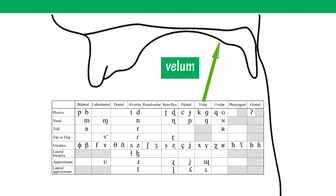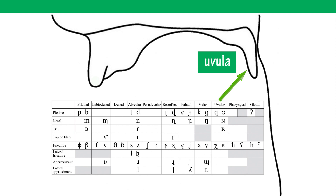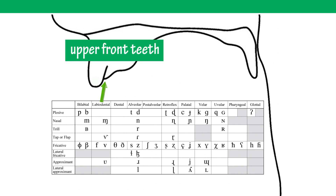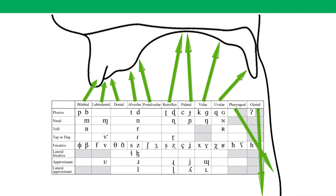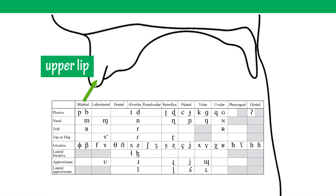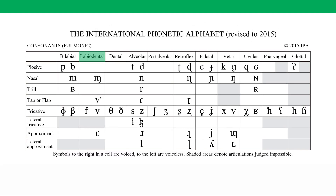For bilabial sounds the passive articulator is the upper lip; for labiodental sounds it's the upper front teeth. Looking at the IPA chart, it's easier to name the passive articulators than the active ones, because the place names are derived from the passive articulators. For example, for bilabial, just remove 'bi' — so the passive articulator in the production of sounds like /p/, /b/, /m/ is the upper lip.